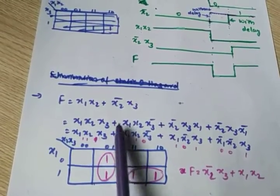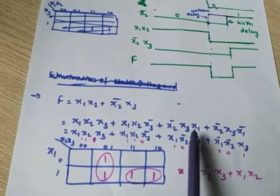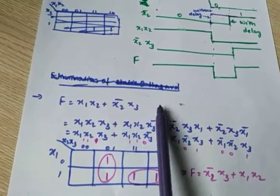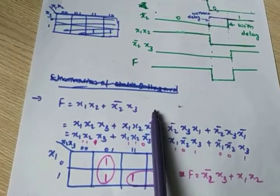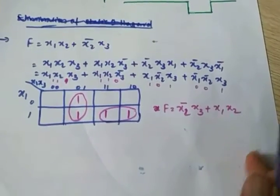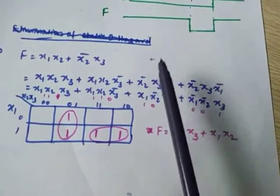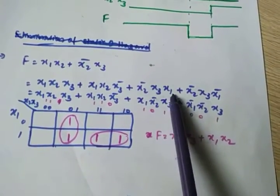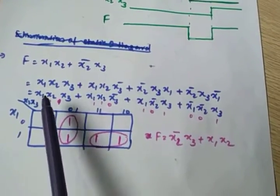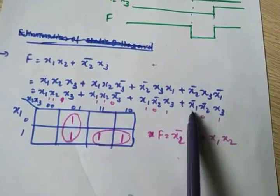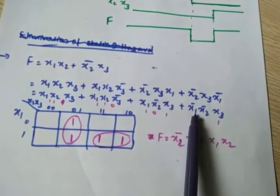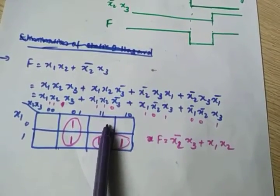After expanding you get: x1x2x3, x1x2x3_bar, x2_bar x3 x1, and x2_bar x3 x1_bar. This is the complete minterm representation of the expression — that is one way. You can then map it to a K-map.